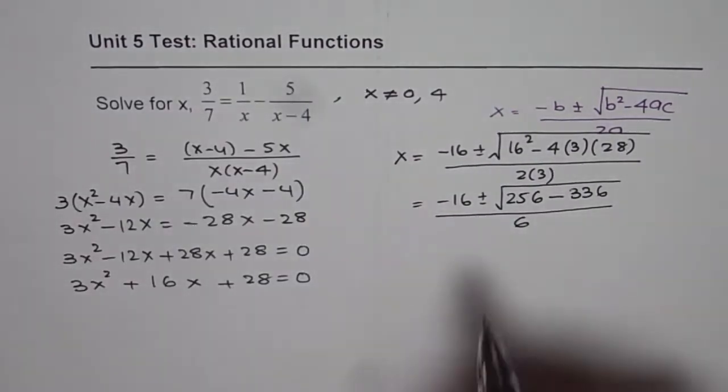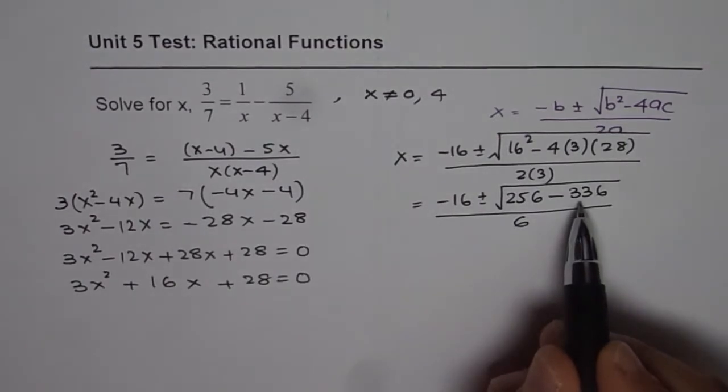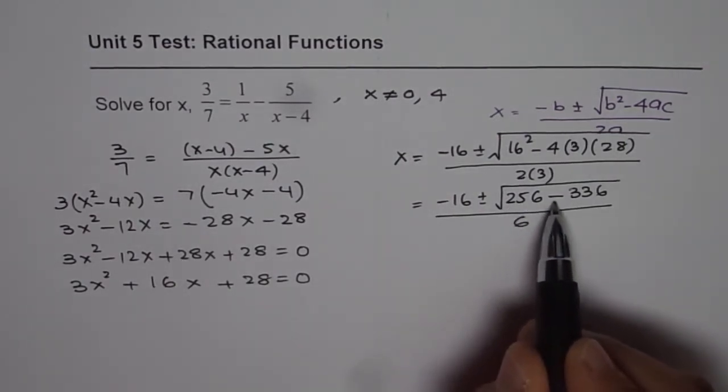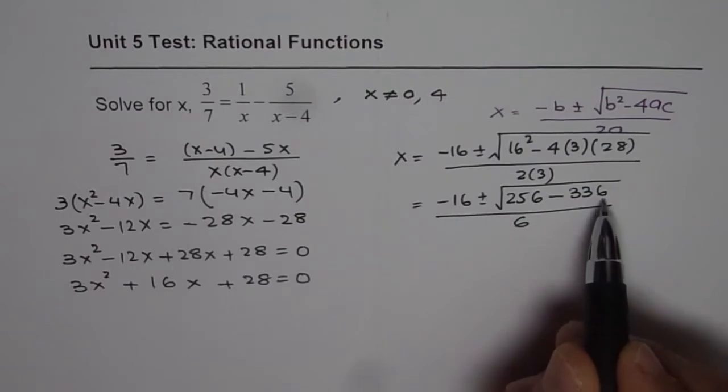Now as you can see, within the square root, we have a negative number. 256 minus 336 is negative 80.